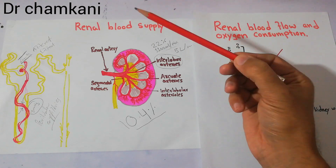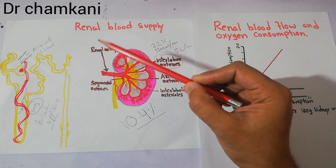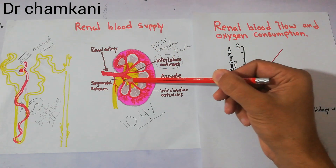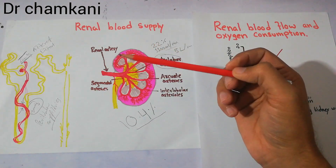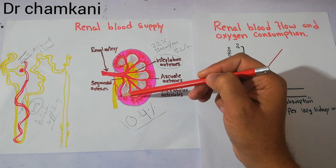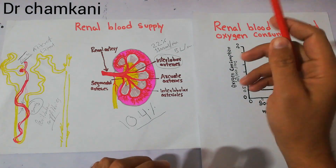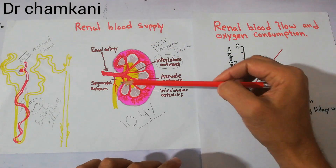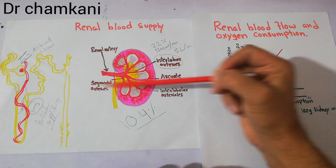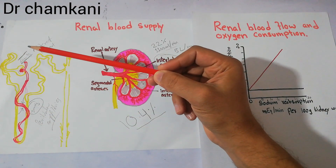The main purpose of blood supply to any organ is to bring nutrients and take back waste material. But inside the kidney, blood flow not only supplies nutrients to all the cells but also helps in the filtration process. The kidney is made of thousands of nephrons, present in the pyramids — microscopic structures where filtration and urine formation occur.